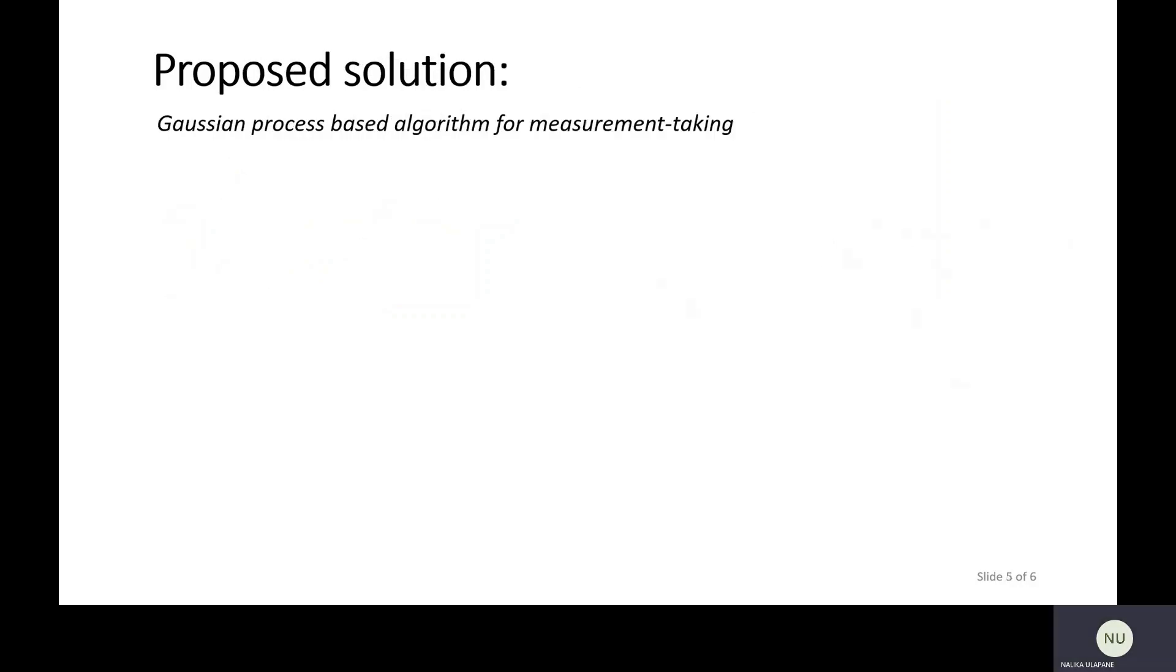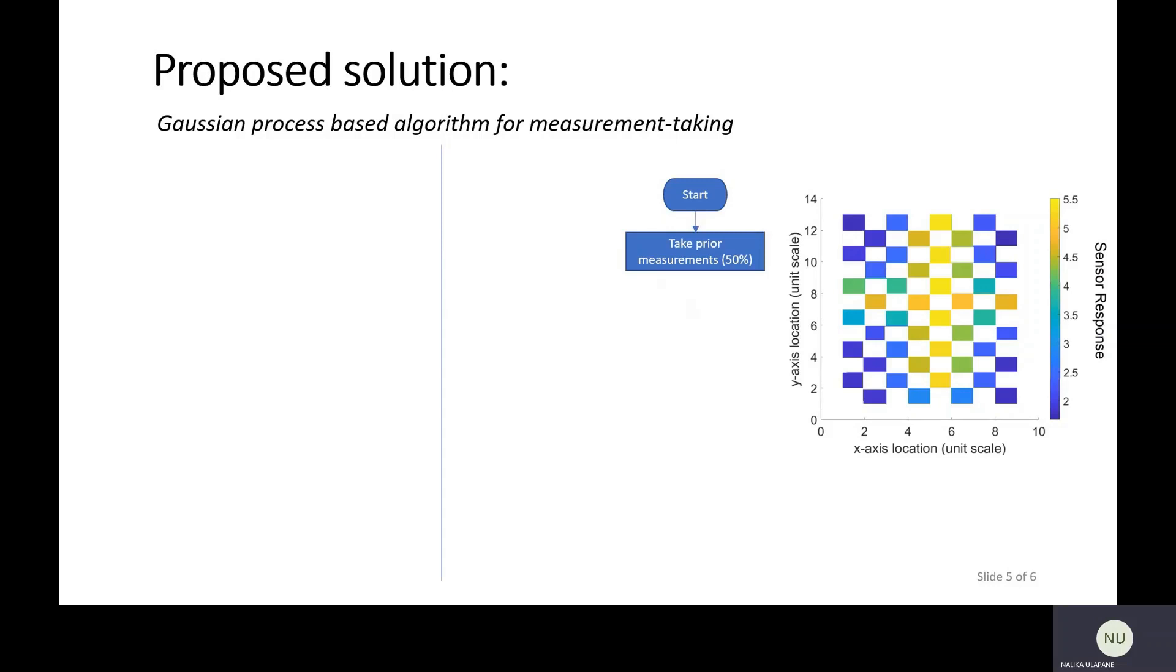With that, I go on to the proposed solution. The proposed solution is a Gaussian process based algorithm for measurement taking. I'm going to present this in terms of a flowchart. To start with, we need to take some prior measurements. As a rule of thumb, we propose roughly 50% of the measurements taken evenly spaced across your 2D measurement space. You have a nice little diagram to the right of the slide. That diagram is going to get animated as I walk along this flowchart.